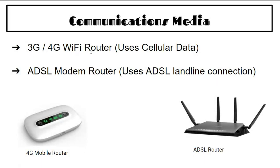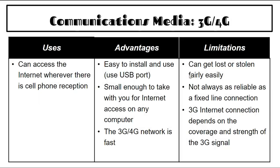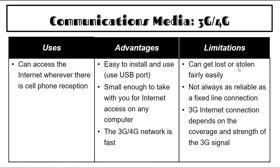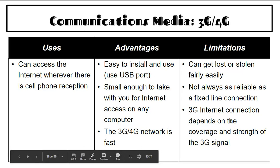Communications media: 3G, 4G, and Wi-Fi router using cellular data; ADSL modem router using ADSL landline connection. With 3G/4G/5G you can access the internet wherever there's cell reception — easy to install via USB port, small enough to take anywhere. However, it's easy to get the dongle lost or stolen, not always as reliable as a fixed line, and signal depends on coverage — poor on stormy days.